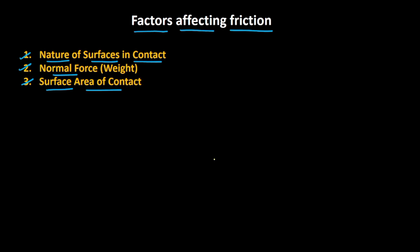I hope you are now clear about the factors affecting friction. Nature of surface in contact: if surfaces are rough, friction is more. Normal force: if the normal reaction is more, the frictional force is more. And friction is independent of the surface area of contact. See you in the next video — bye-bye.